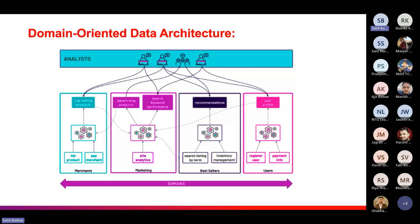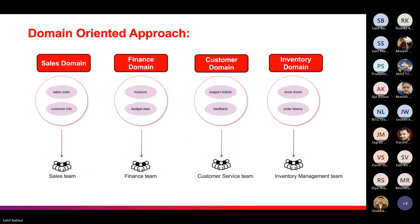Now let us see how different domains take ownership of their data. Consider an e-commerce application where we have different domains like sales, finance, customer, and inventory. Instead of having one central data team, we have segregated teams for different domains: a sales team for the sales domain, a finance team for the finance domain, a customer service team for the customer domain, and an inventory management team for the inventory domain.